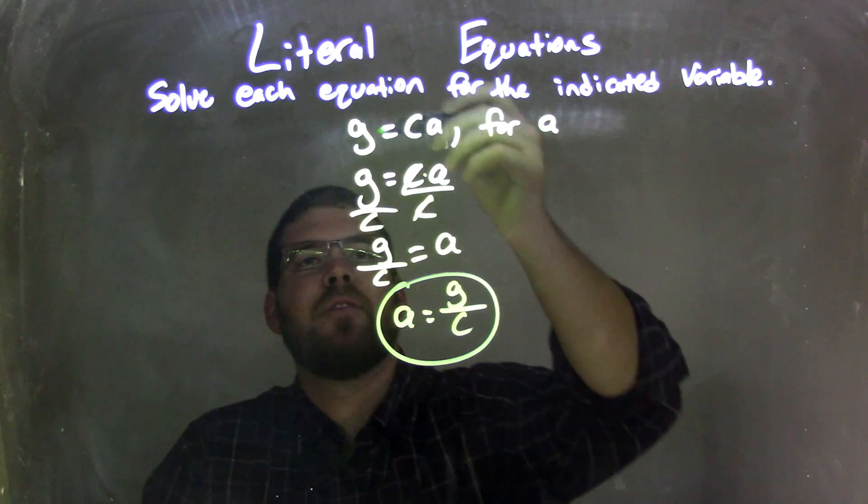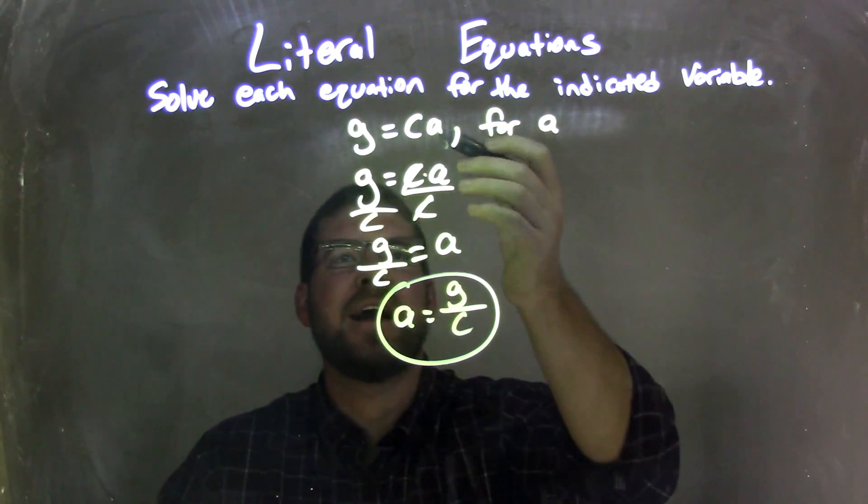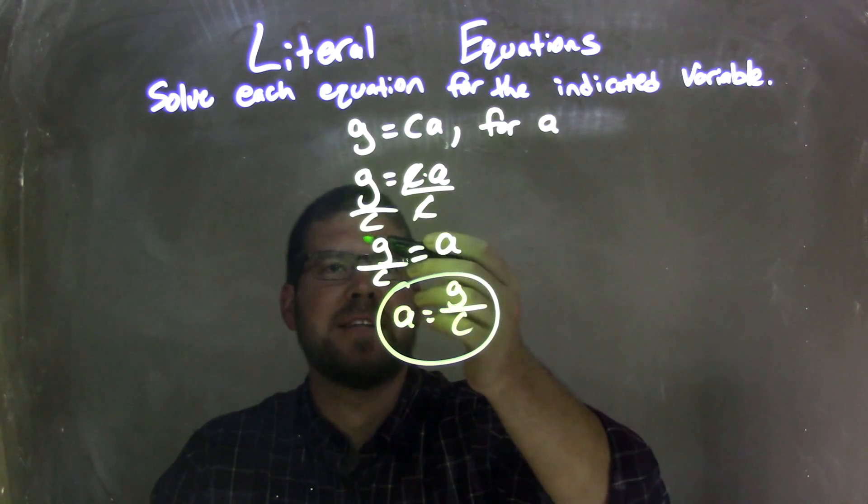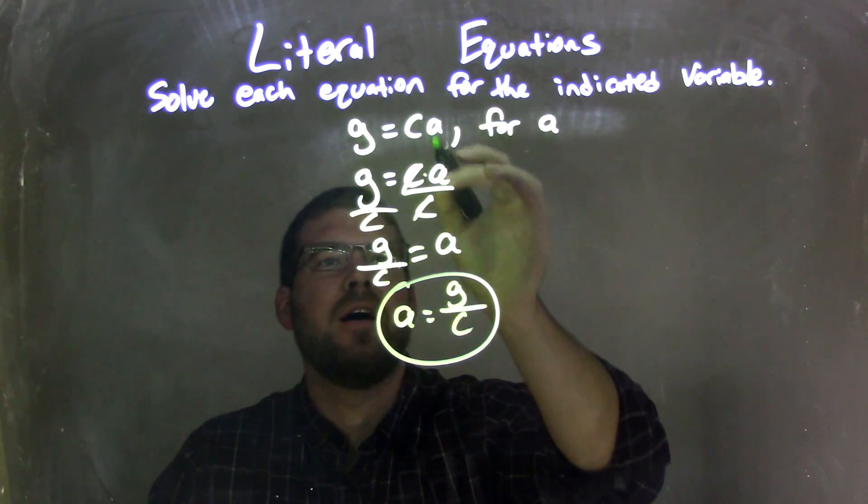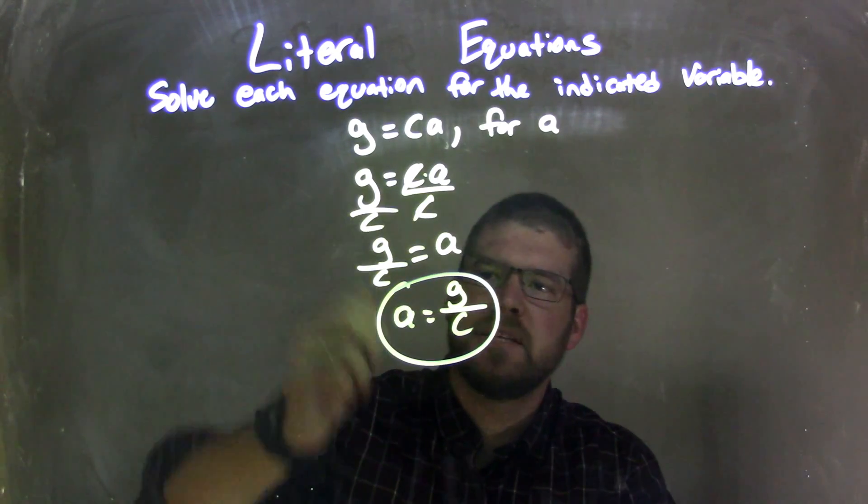So let's recap here. We have G equals C times A, and we need to solve that for A. I rewrote the equation, then I divided C to both sides, because CA is C times A, and the opposite of that is division divided by C to both sides.